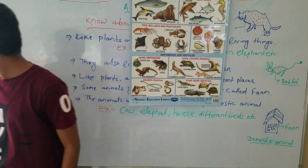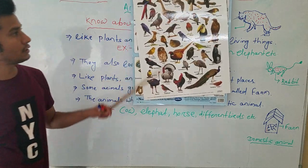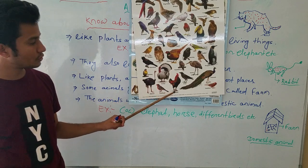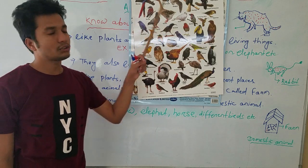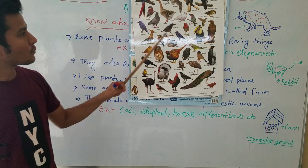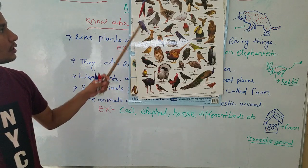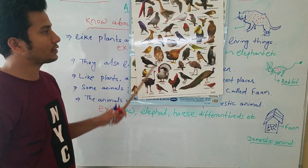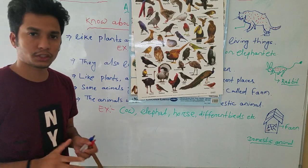These are birds, which also come under animals. See — all these birds you might have seen. They are all different from each other. You can see crow, rooster, turkey, kingfisher, different types of pigeons. Compare a dog and a pigeon — a dog is white but a pigeon is a different color. So all these animals are different from each other, just like plants and human beings.